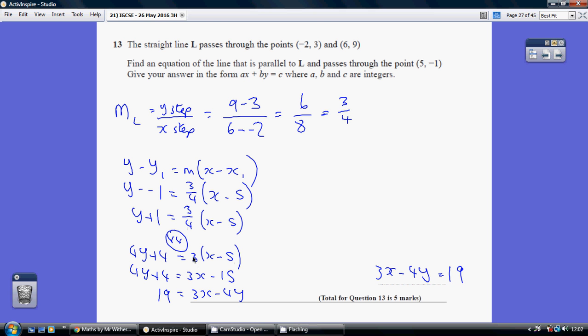I've then multiplied out the bracket on the right, 3x minus 15. I've added 15 to both sides and taken away 4y, giving me 3x minus 4y equals 19.